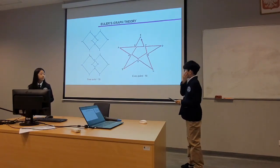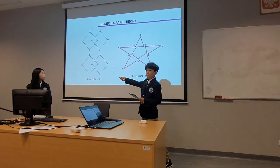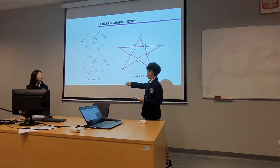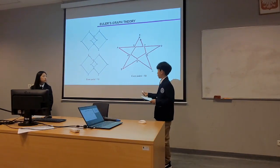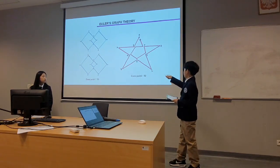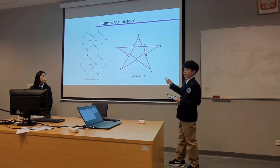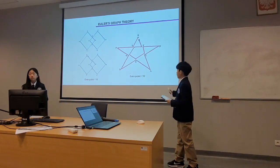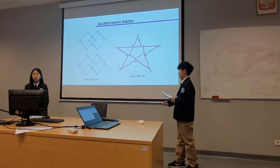We drew some examples of Euler's circuit. In the first shape, we start from point A and we end at point A. In the second shape, we start from point E and we end at point E. These two figures have only even points, so they are Euler's circuits.